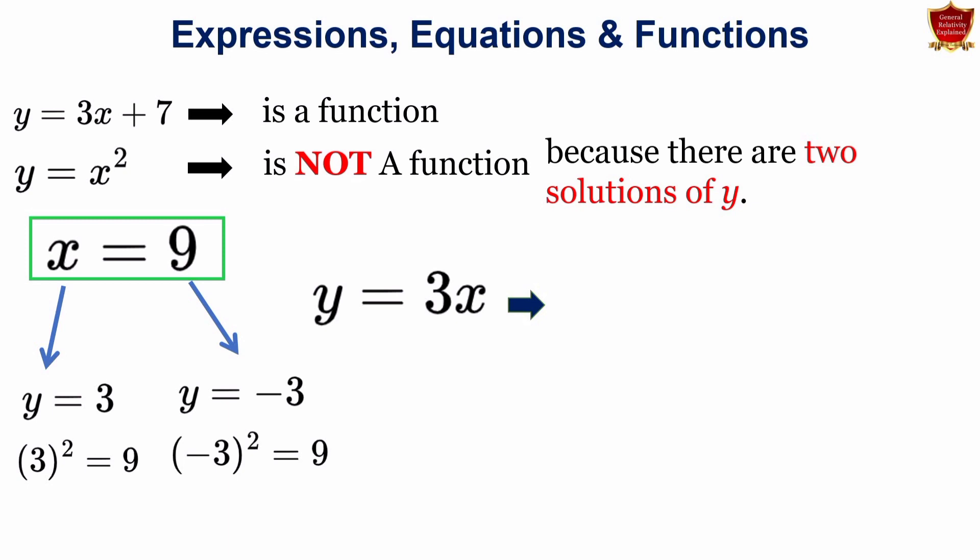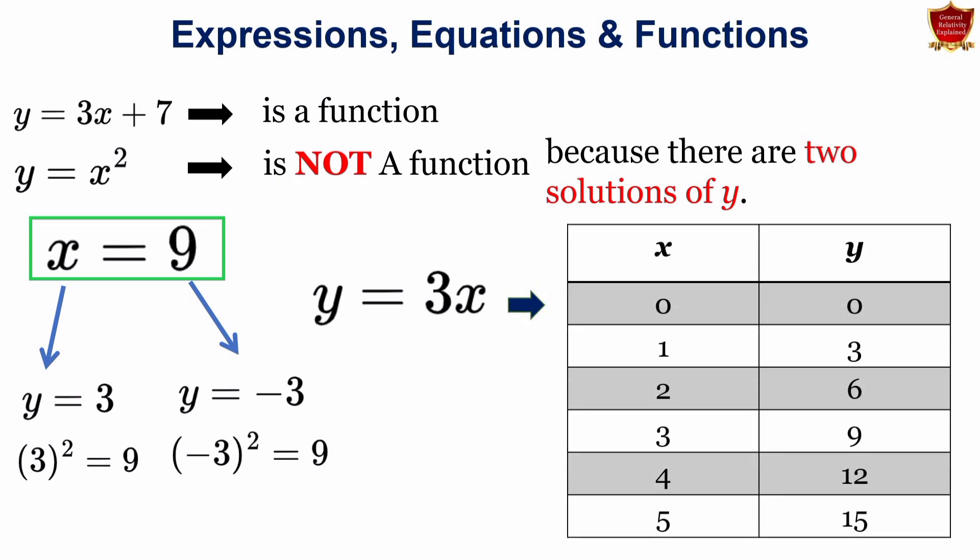If you let x equals to the whole numbers of the value, say for example, this 0 to 5, we get the values of y as this one. For 0, we get 0. Then for 1, we get 3. For 2, we get 6 and so on. So this is a basic idea. What are expressions, equations and how functions really behave?